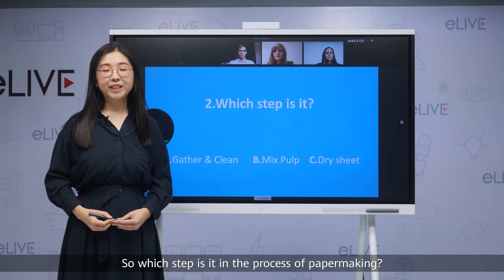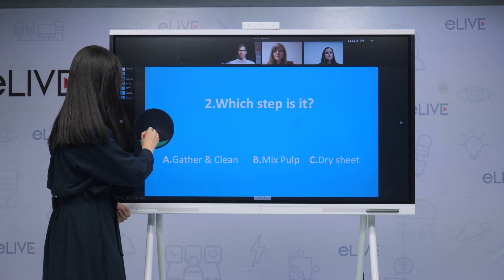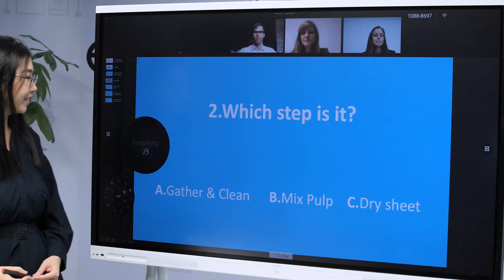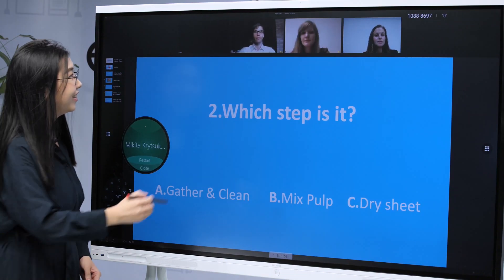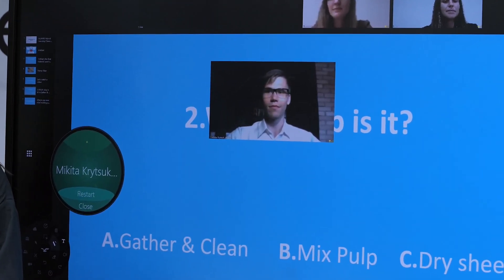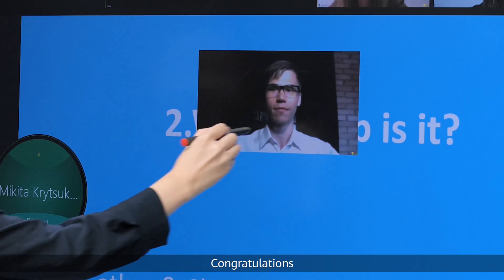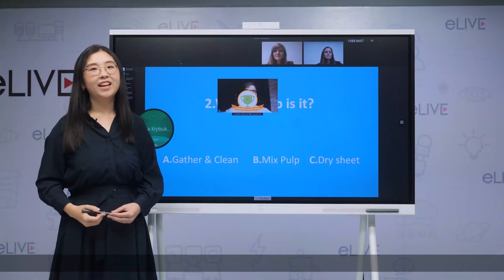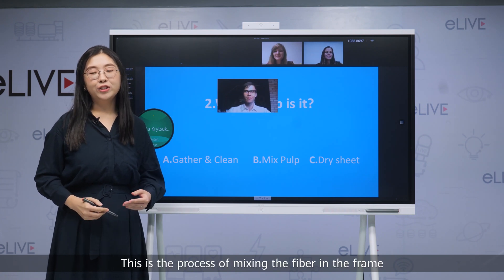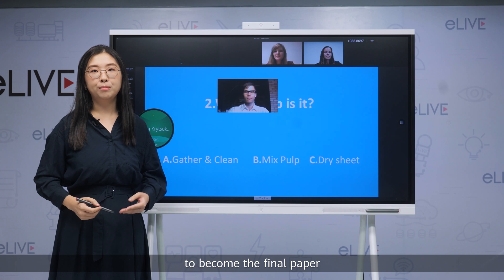Which step is it in the process of papermaking? Let's start. Mikita, would you like to tell us your answer? My answer is B — mixed out. Congratulations! It is right. This is the process of mixing the fibers in the frame, and then it will be taken to dry to become the final paper.